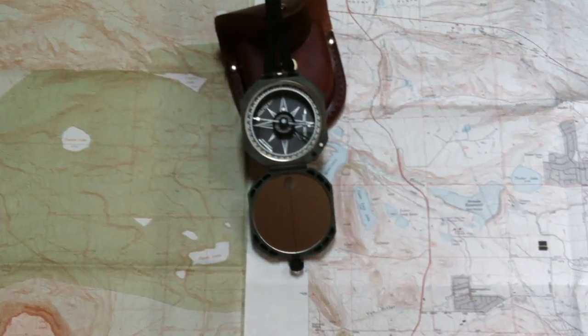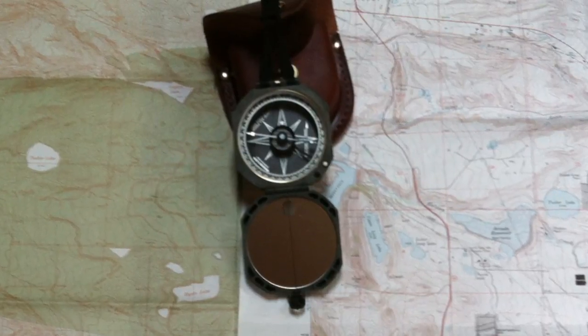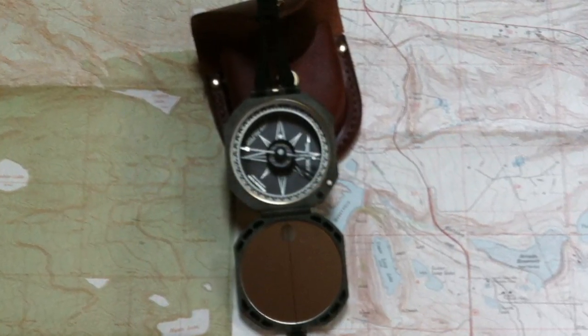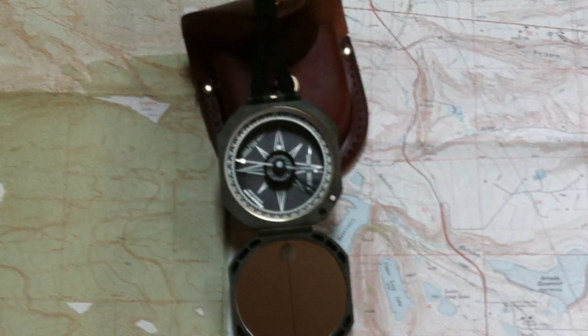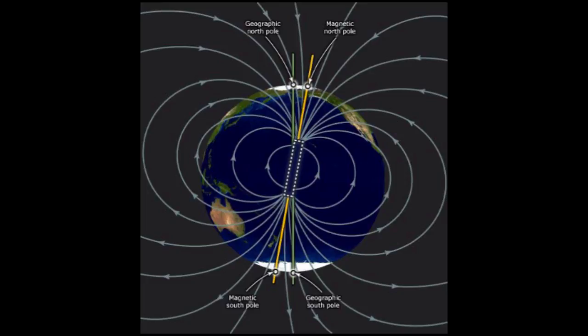There are some places on Earth where your north arrow will point east, or west, or even south. Why is that? Because the magnetic poles of the Earth are not the same as the rotational poles.